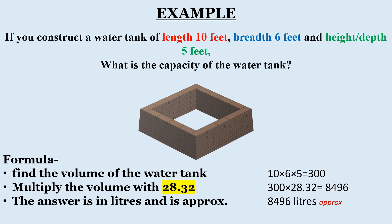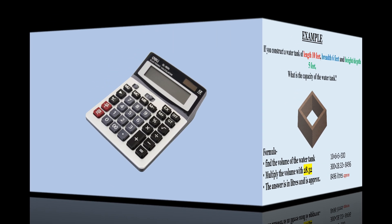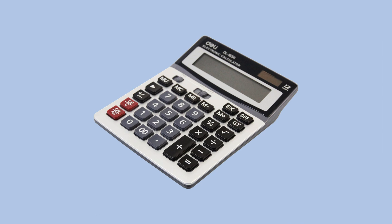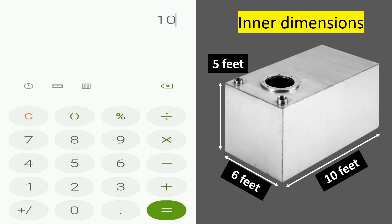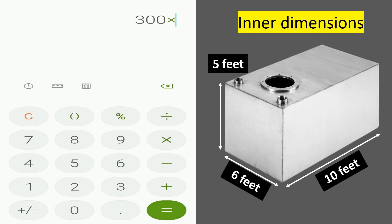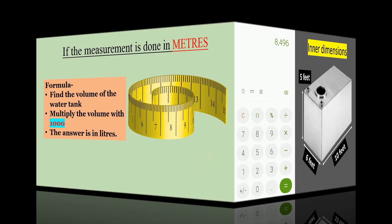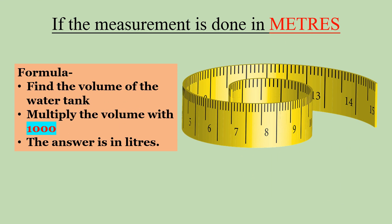To make it easier to understand, let us check this in our calculator: 10 into 6 into 5 equals 300; 300 into 28.32 equals 8496, which is 8496 liters.